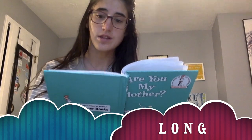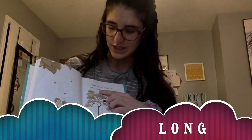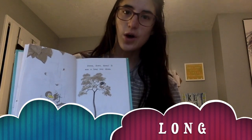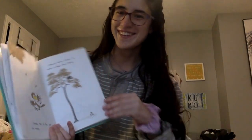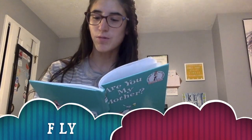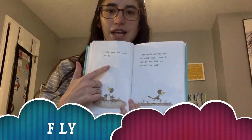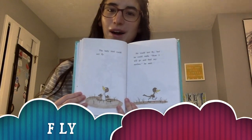Down out of the tree he went. Down, down, down. It was a long way down. This sight word is long — L-O-N-G. The baby bird could not fly. He could not fly, but he could walk. Now I will go and find my mother, he said. This sight word is fly — F-L-Y.